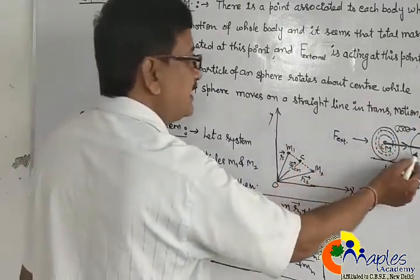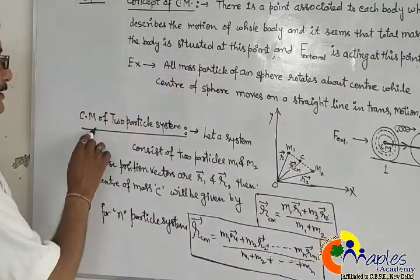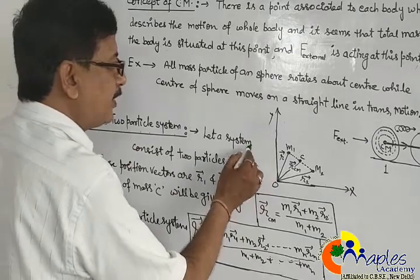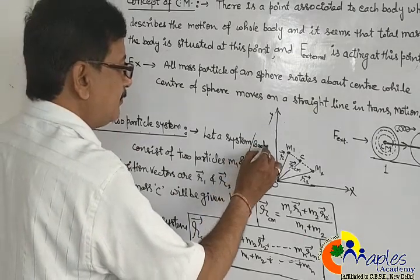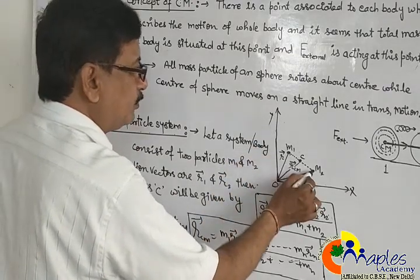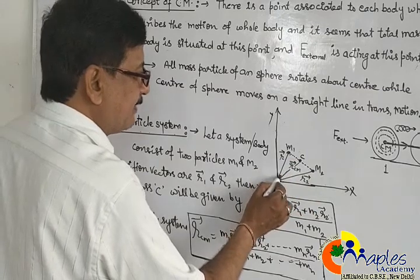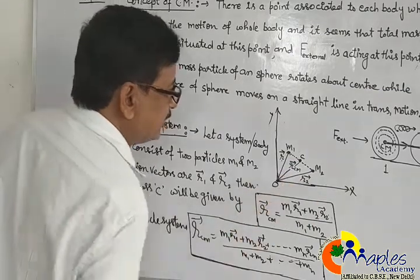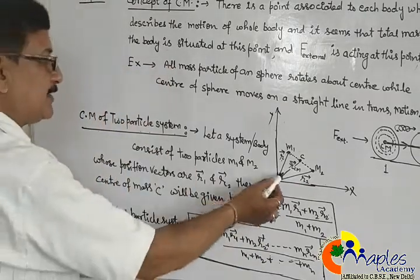So this point is called center of mass. What is the position of center of mass? For a two particle system, suppose we have a system which consists of two particles M1 and M2. Their position vectors with respect to origin are R1 and R2.